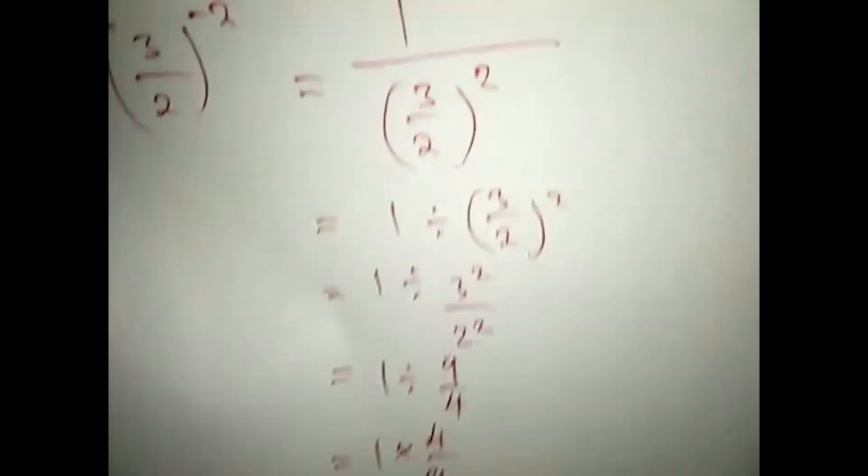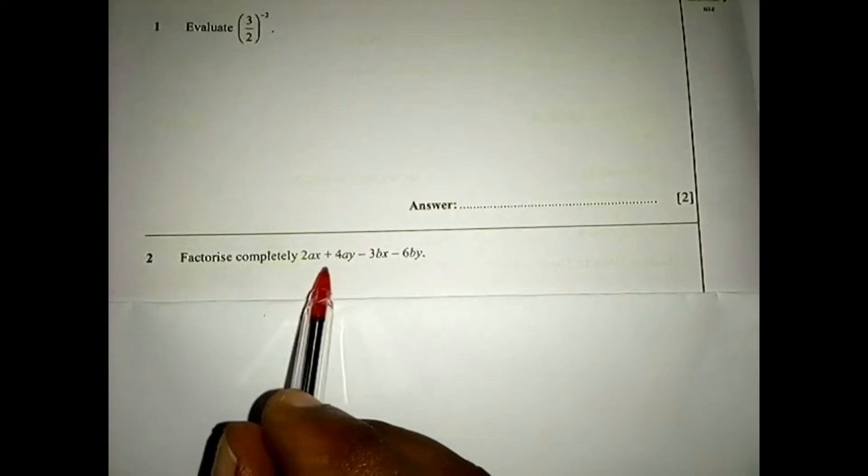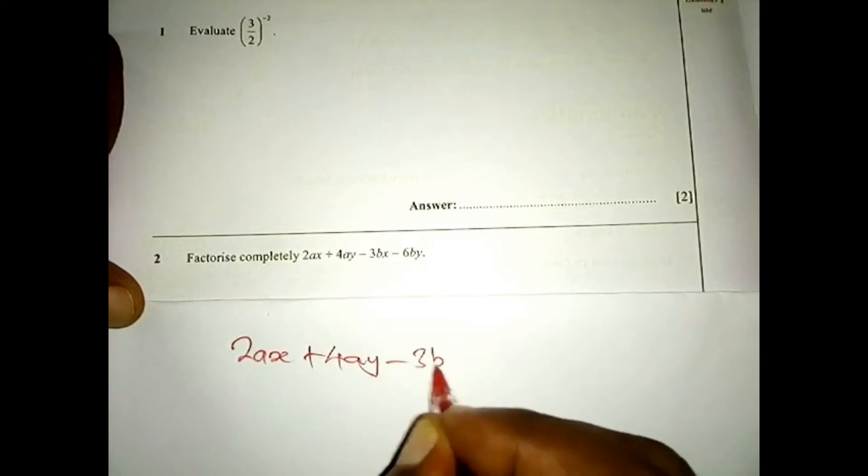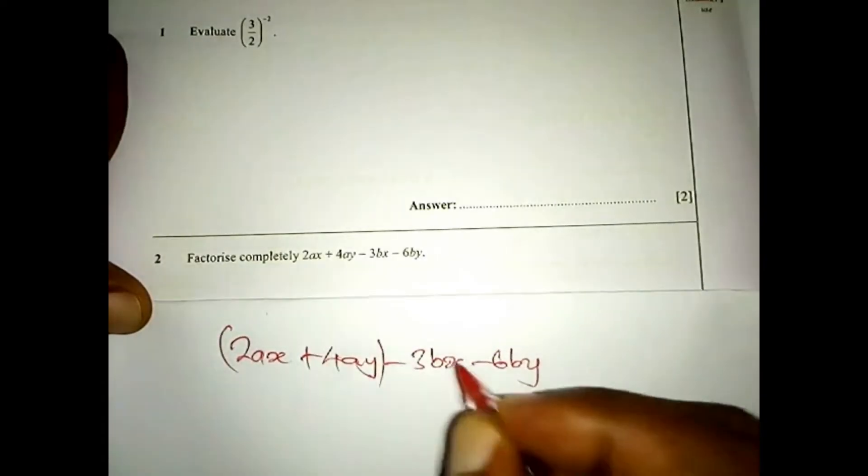The next question says: factorize completely 2ax plus 4ay minus 3bx minus 6by. You write it as 2ax + 4ay − 3bx − 6by. Such a question is answered by grouping — you group the first two terms together and the last two terms together, then look for common factors in each group. Here the common factor is 2 and a, because 2 divides into both 2 and 4.